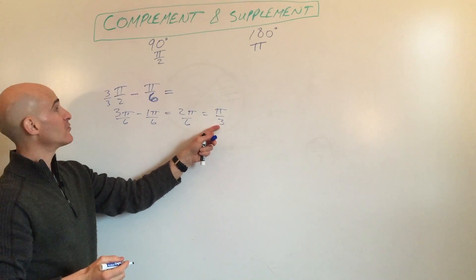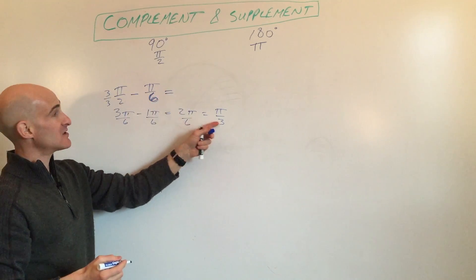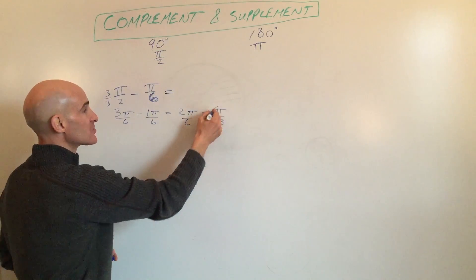So π over 3 would be the complement to π over 6, meaning these two are going to add up to 90 degrees or π over 2. That's your complement.